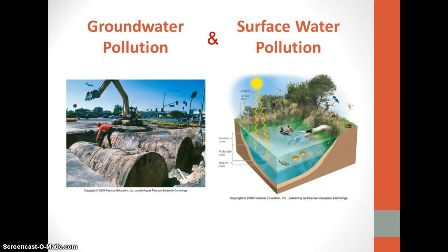Both groundwater pollution and surface water pollution are of concern. Groundwater refers to the pollution of aquifers, and pollution can come from both point and non-point sources. In an aquifer, pollutants are slow to break down in cold temperatures and dark environments. In lakes and reservoirs, there is typically a low flow rate and a long residence time, and pollutants can accumulate and concentrate due to deep stratification. In streams and rivers, there is a higher flow rate and a dilution effect; waters are often turbulent, so they are well mixed and well oxygenated. However, streams and rivers often flow near cities, and due to long riverbanks, they have extensive contact with land, subjecting them to non-point source pollutants.